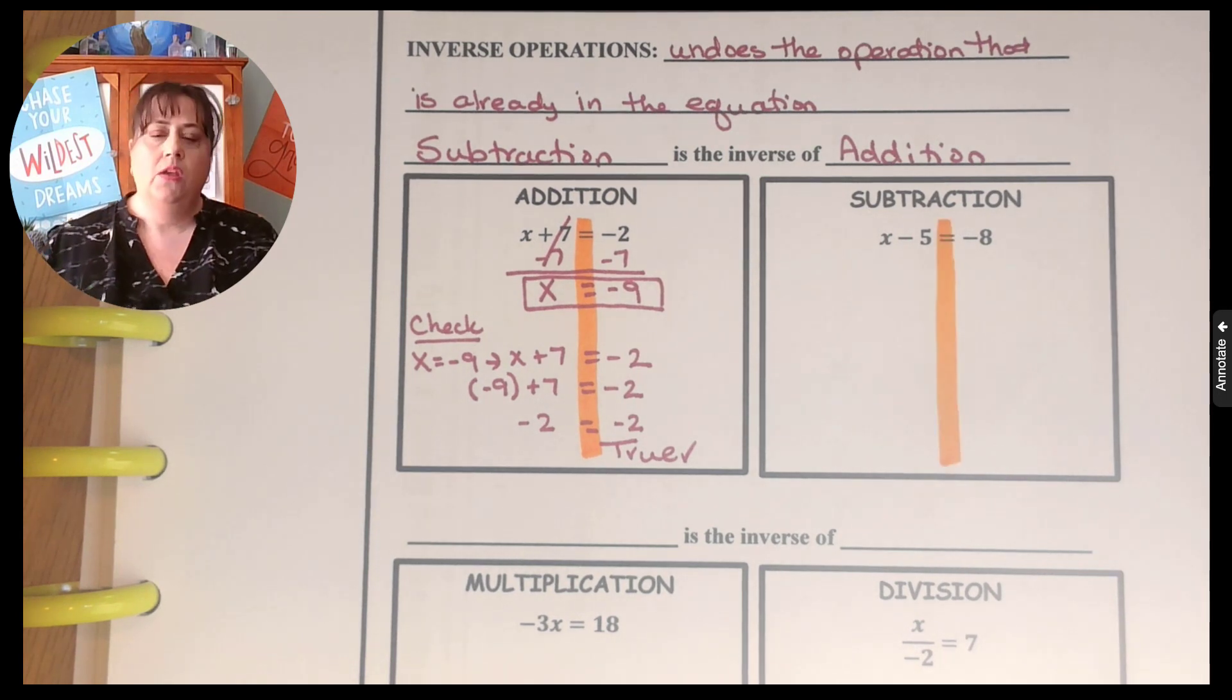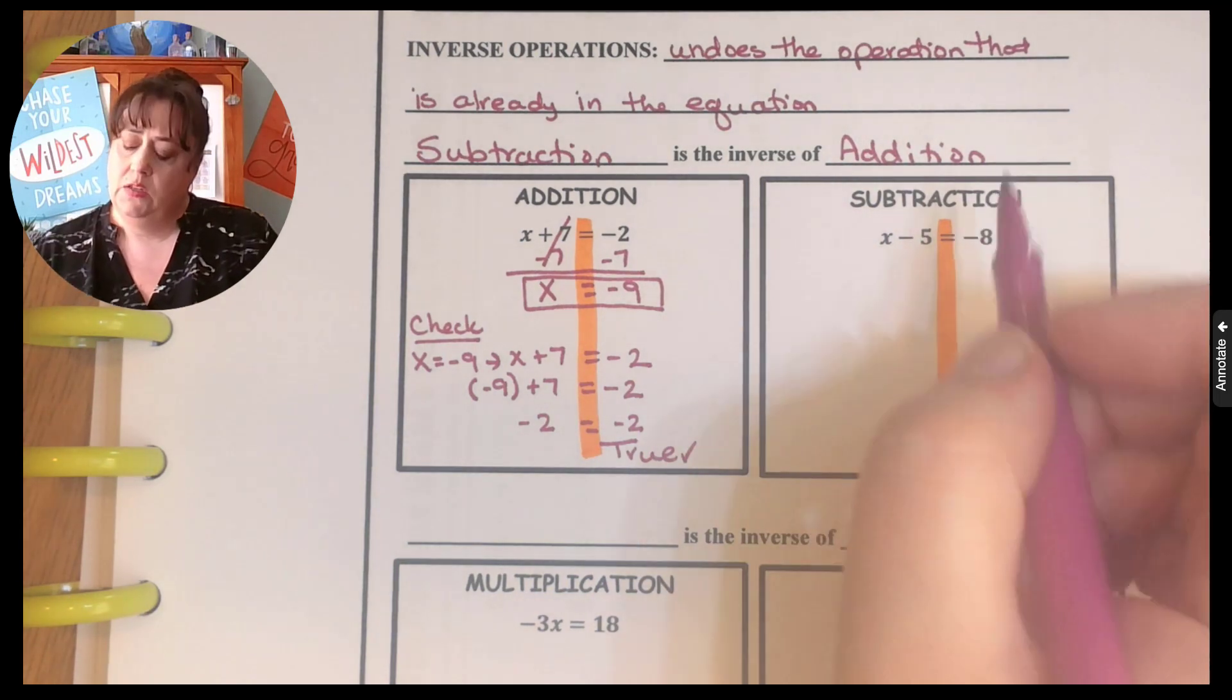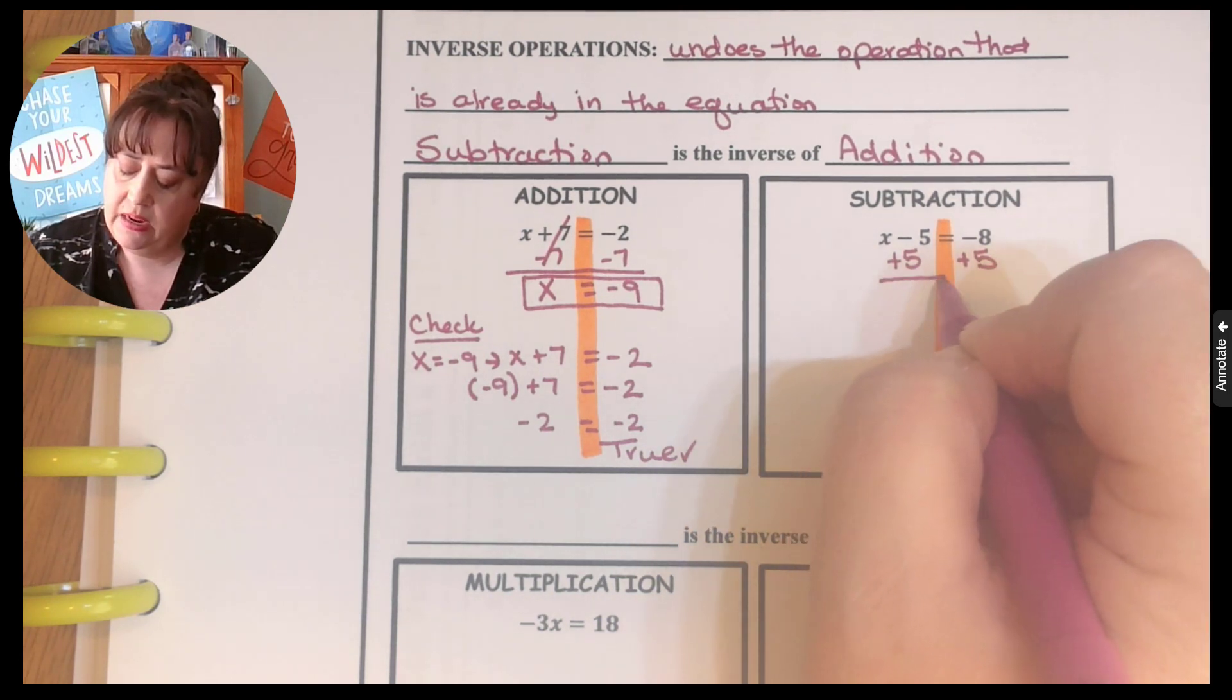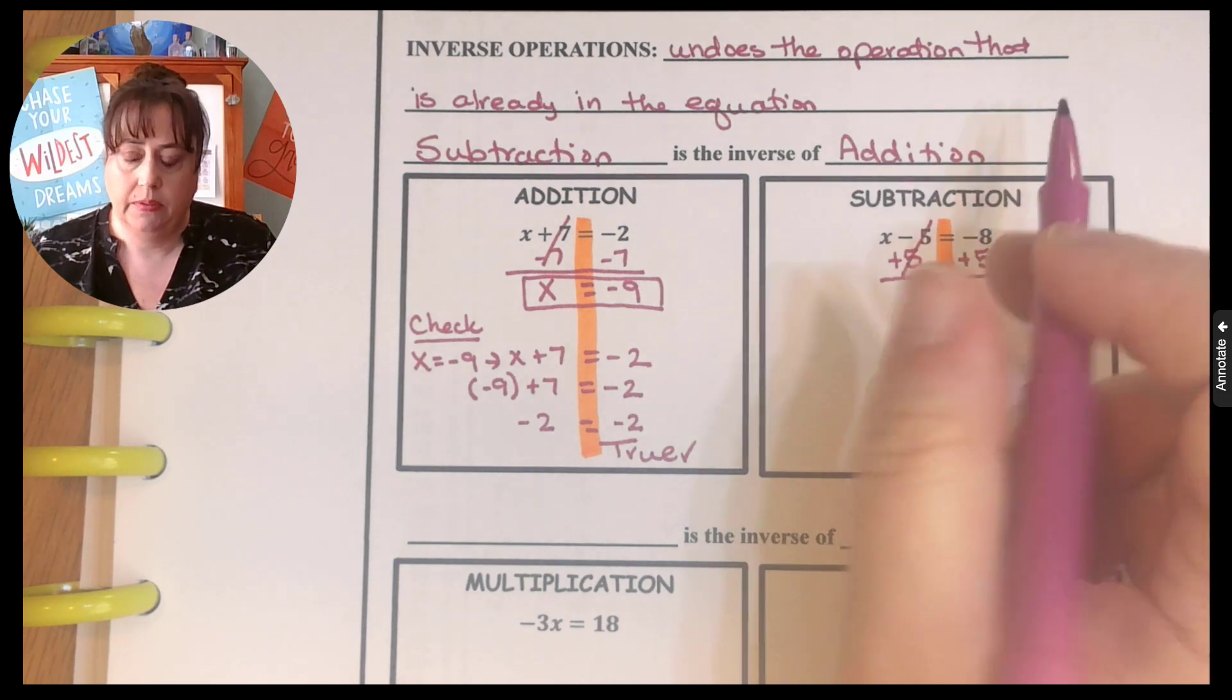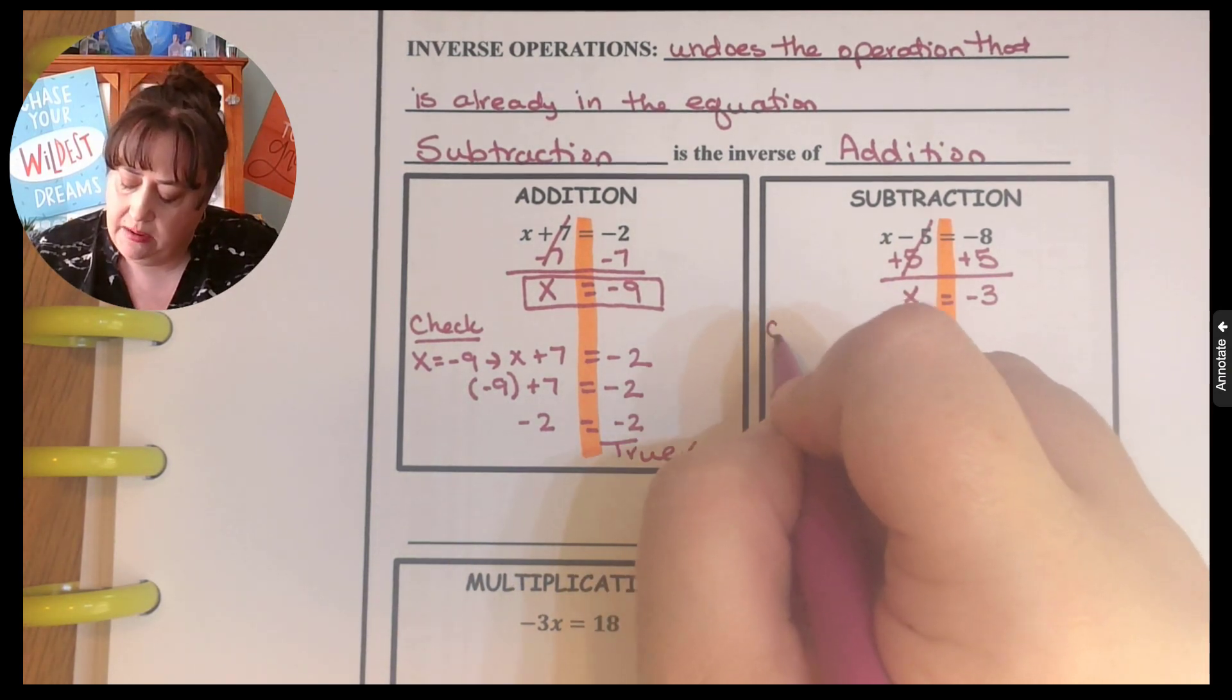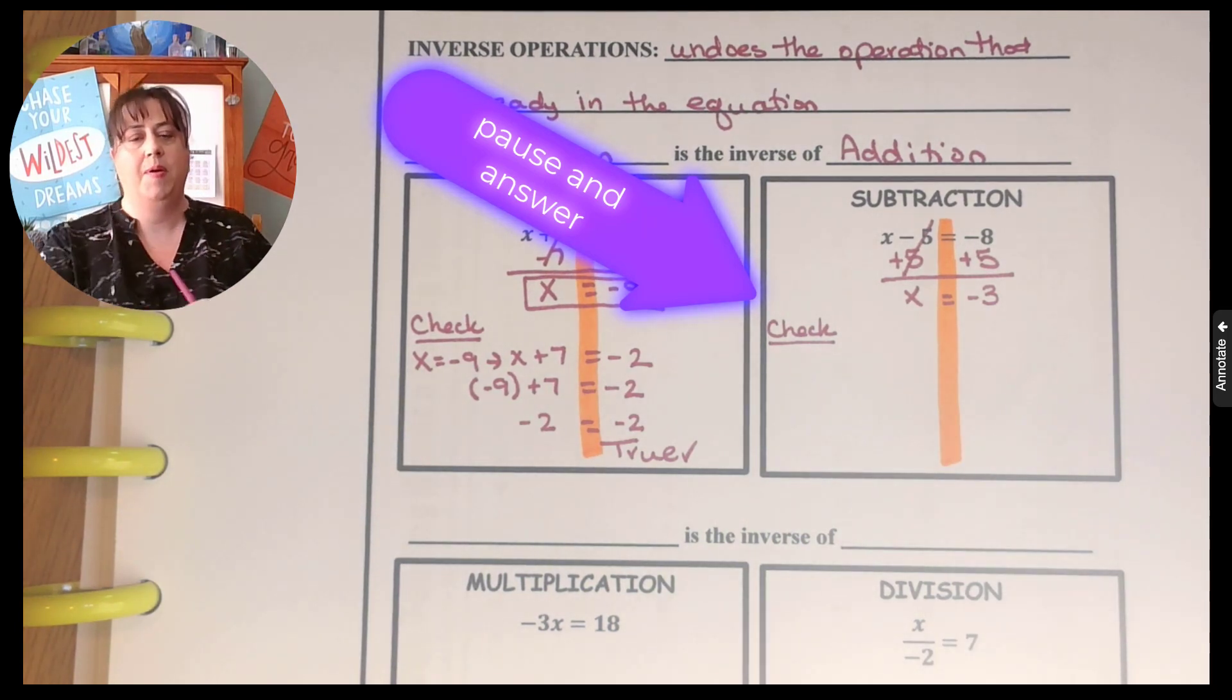So now let's look at subtraction. So the question here is, what was x when then I subtracted five and I ended up all the way at negative eight? So the opposite of subtraction is addition. So if I add five to this side, I also have to add five to this side so that it stays nice and balanced. So that would be zero and I'm left with x, and negative eight plus five would be a negative three. So I think that's my answer, but now I have to check it. So go ahead and pause this as you go through the check and then come on back.